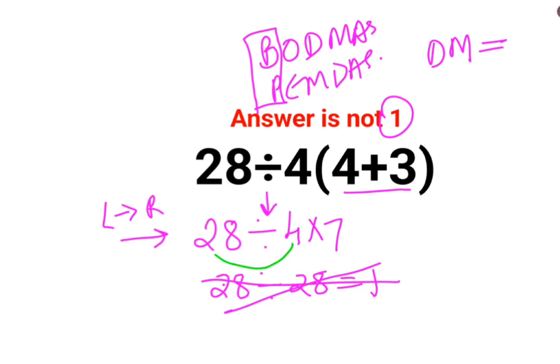So first we will do 28 divided by 4 which is 7, multiplied by 7. The answer for this question is supposed to be 49.